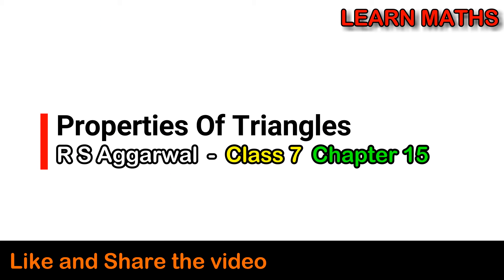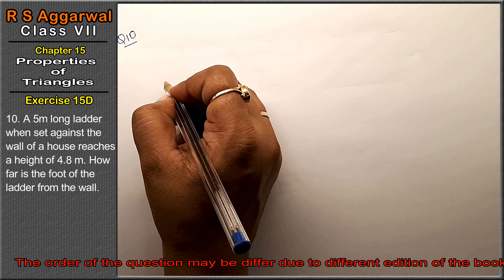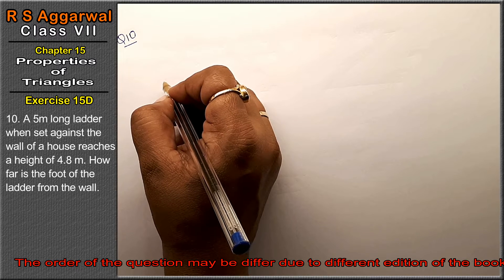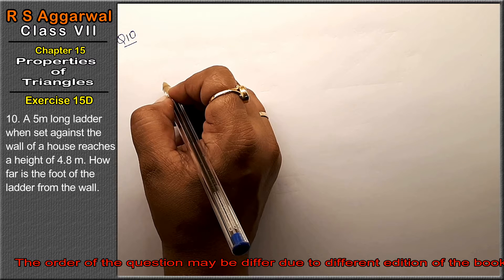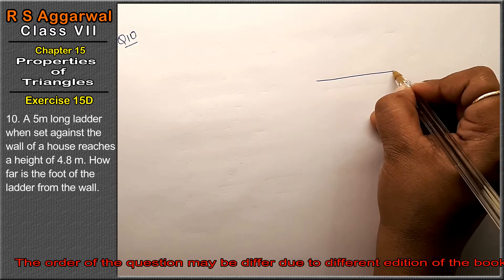Let's do question number 10 of exercise 15D, that is properties of triangles. Question number 10 is: a 5 meter long ladder when set against the wall of a house reaches a height of 4.8 meters.